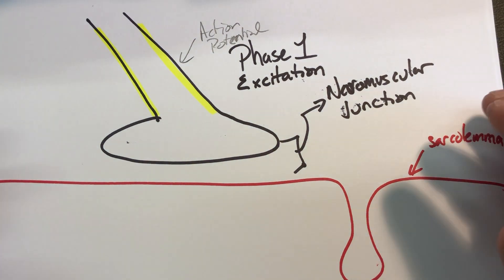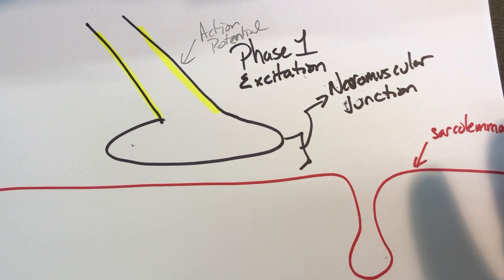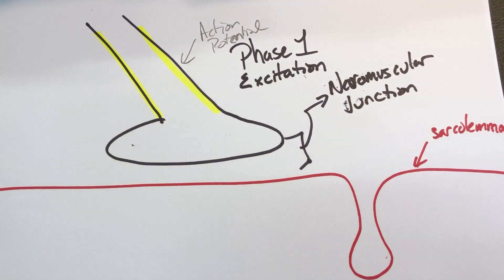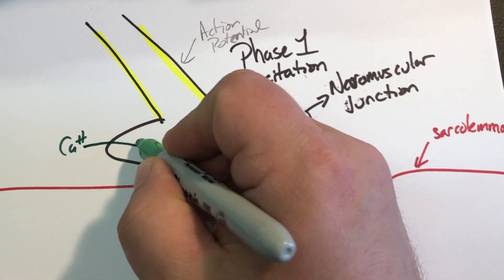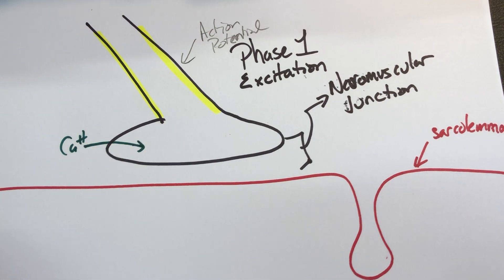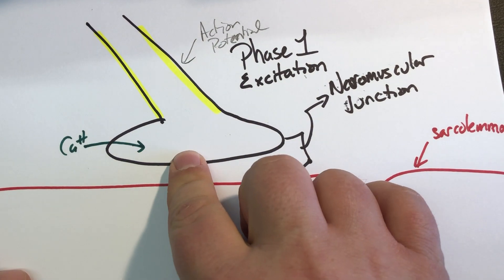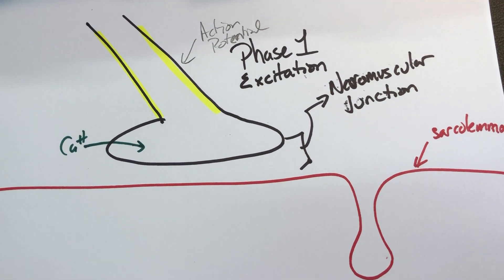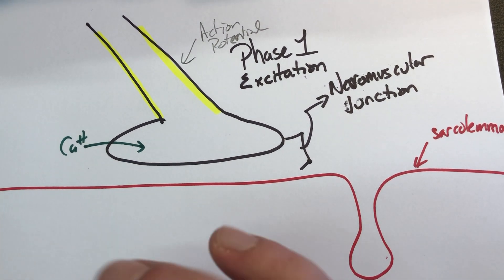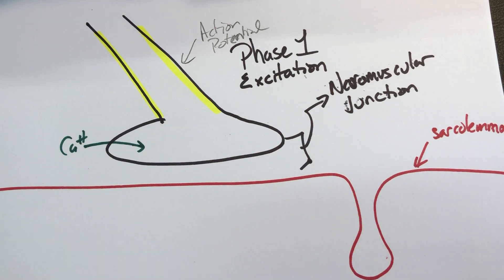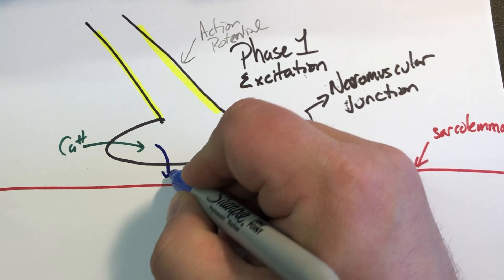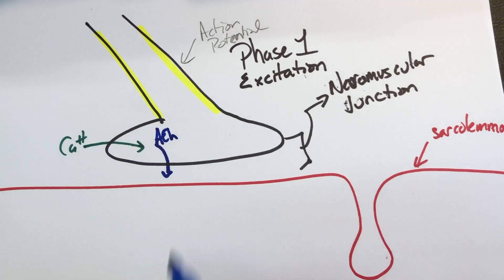So in sequence, a couple of things have to happen. One, and this is where everyone wants to talk about calcium. So calcium comes into that presynaptic space, and that's how the depolarization plays itself out in the presynaptic space, kind of glossing over a couple of the things that have to happen. The end result of that calcium coming in is that neurotransmitter gets released, and the neurotransmitter at the neuromuscular junction is acetylcholine.